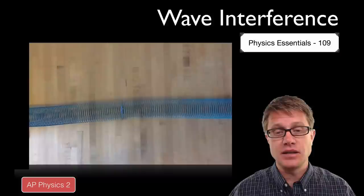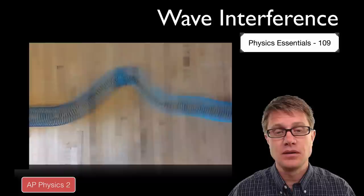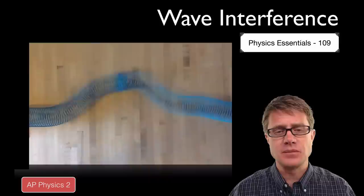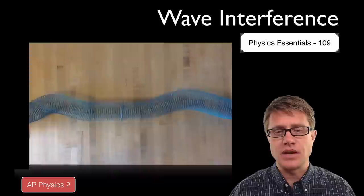I have got a slinky here and I am going to send two waves towards each other. Watch what happens when they meet so the wave becomes bigger. But did the waves bounce off each other or did they move through one another? Well it is kind of hard to tell. Since both waves are on the same side we do not know if they bounced back or if they went through.